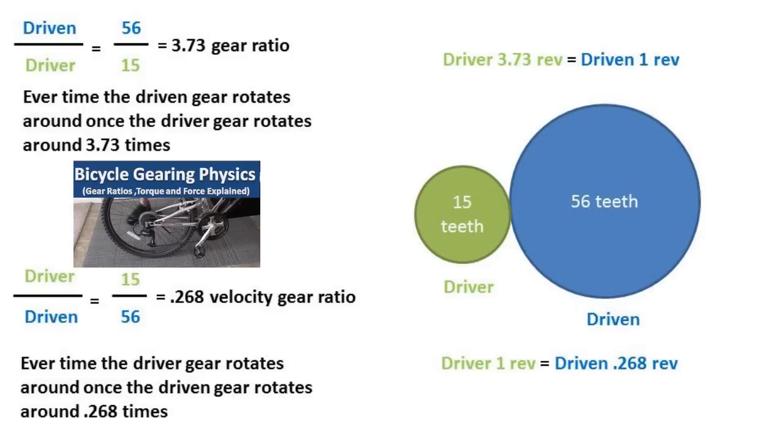In my bicycle gearing physics video, I took the driver gear over the driven gear. This resulted in the velocity gear ratio, or how many times the driven gear rotates around for one revolution of the driver gear.